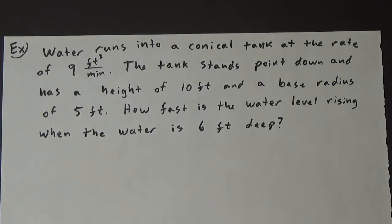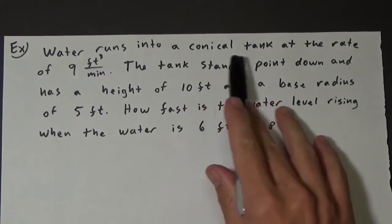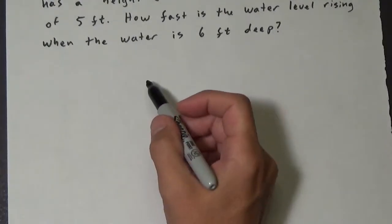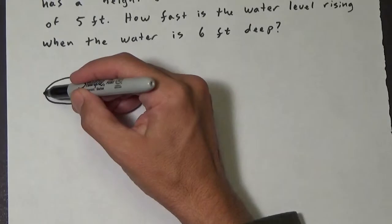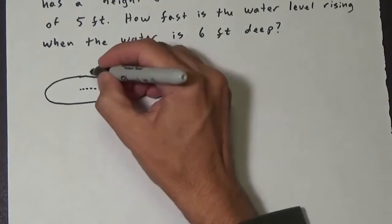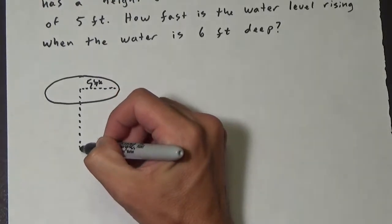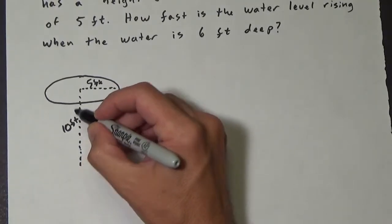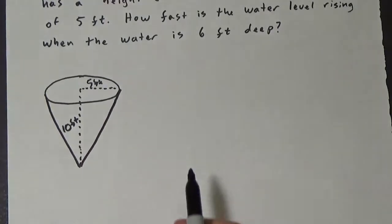Okay, so let's go ahead and make a sketch of what this looks like. We have a conical tank, which is basically a cone and it's point down, so we essentially have an upside down cone. So there's our cone.